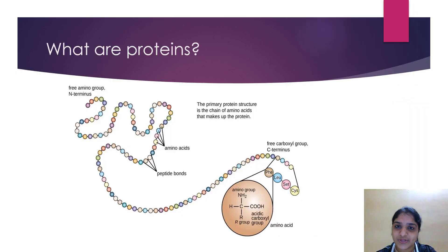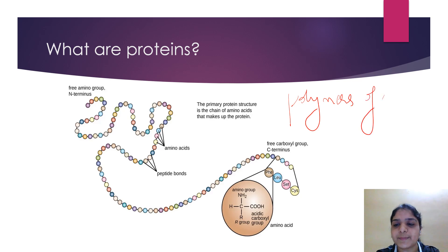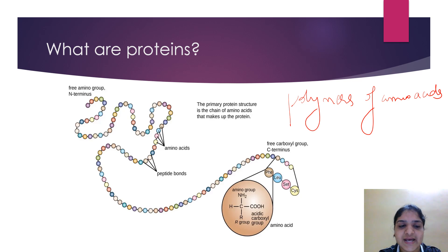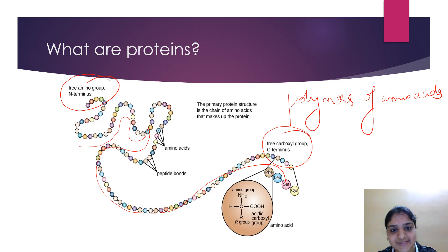So let's see what are proteins. Proteins are polymers of amino acids — many amino acids are linked together to form a protein. A protein has a free amino group, the amino terminal, and the free carboxyl group, the carboxy terminal.